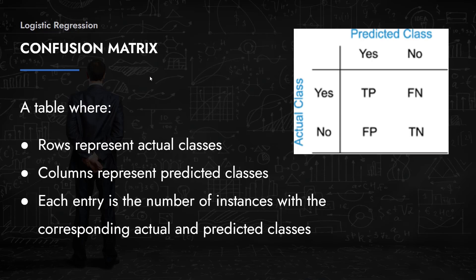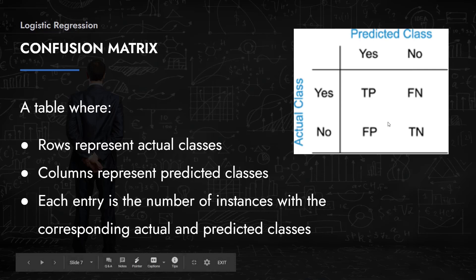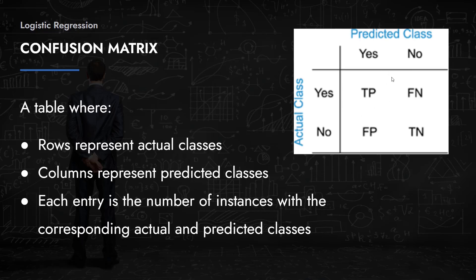We need to define a confusion matrix so we can define other performance measures. A confusion matrix is a table where the rows represent actual classes — for example, whether a patient actually has cancer or not — and the columns represent the predicted classes from our classifier. Each entry is the number of instances with the corresponding actual and predicted classes.